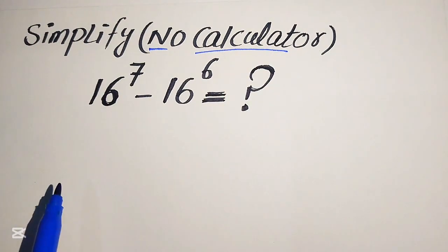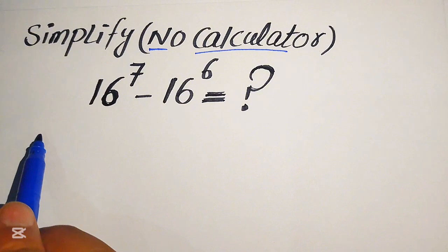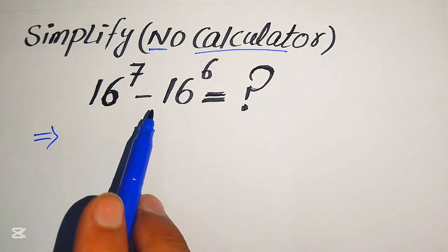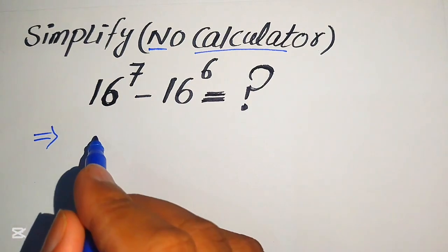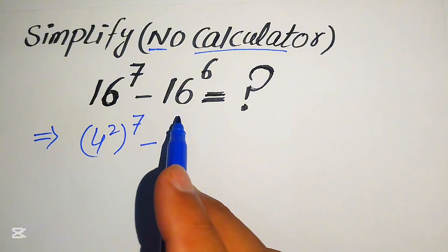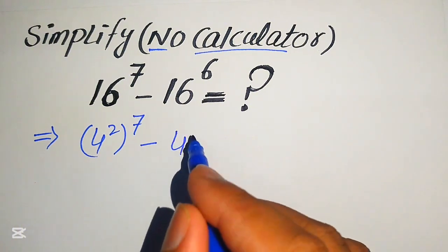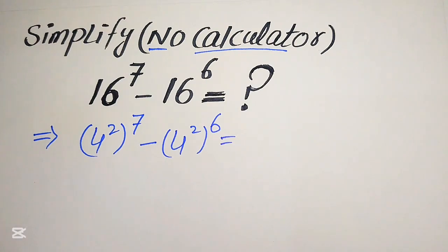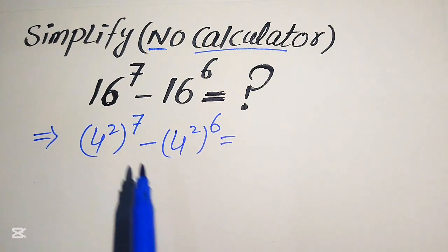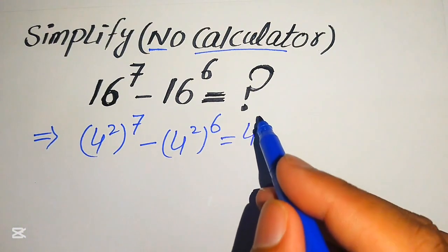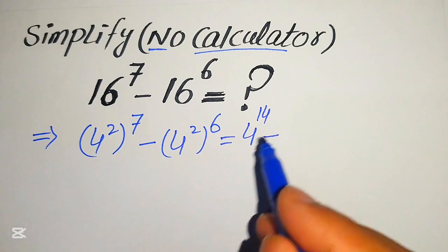The first step is to break the bases of these terms. Since the base is 16, we write it as 4 squared, with whole power 7, minus 4 squared with whole power 6. Now we apply the exponent law by multiplying the two exponents, giving us 4 to the power of 14 minus 4 to the power of 12.